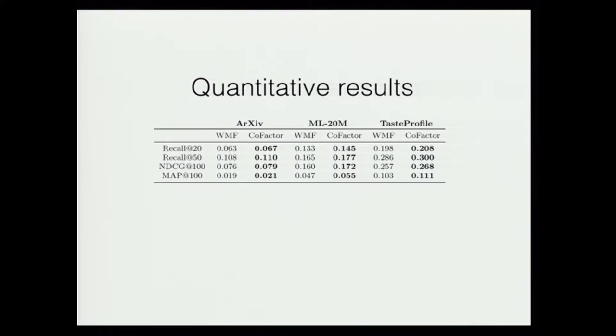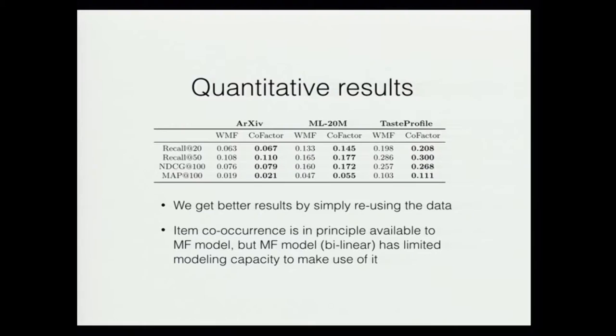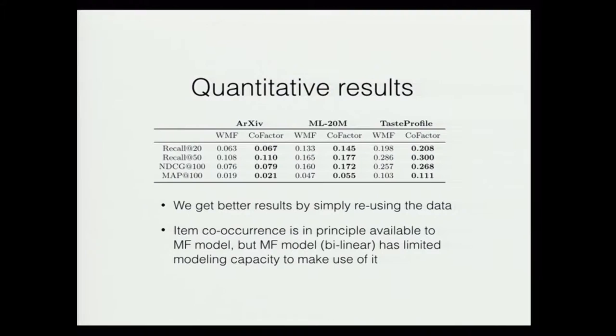We simply get better results by reusing the data twice in different ways. What's even more interesting is that this item co-occurrence pattern is in principle available to the matrix factorization model — it's just that as a very limited bilinear model, it doesn't have enough modeling capacity to uncover this structure by itself. So you can consider the co-factor model as a form of feature engineering where we re-encode the data in a different way so the model can learn better.